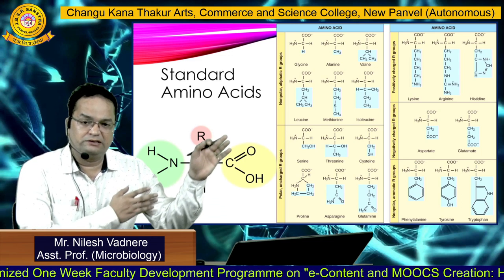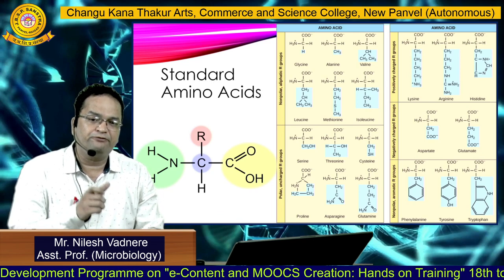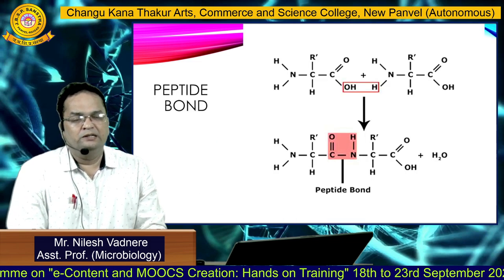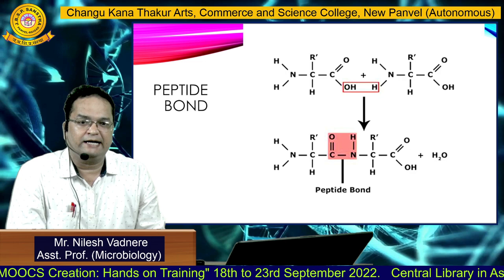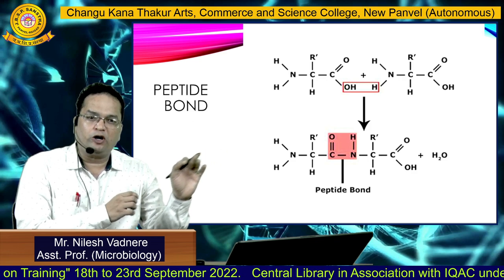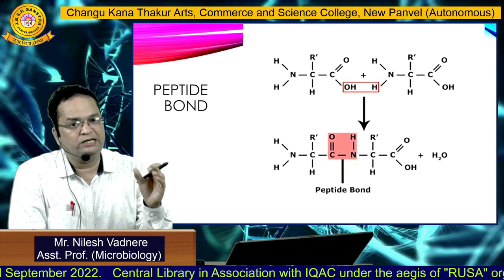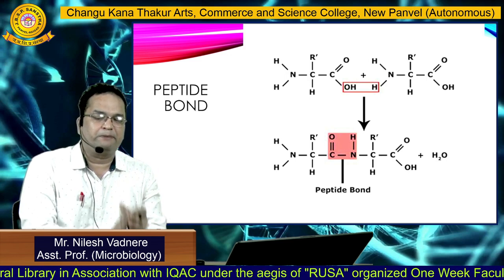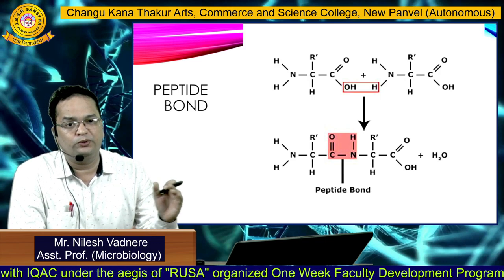Here you can see the structures of those 20 standard amino acids. These amino acids differ only with respect to their R-side chain. In proteins, amino acids are linked by a special type of bond called a peptide bond. This bond is formed between the carboxylic acid group of one amino acid and the amino group of another amino acid — the carbonyl carbon and alpha nitrogen are linked by the peptide bond. Overall, the structure of the peptide bond is C double bond O — NH.